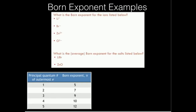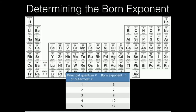Let's do some examples where we determine the Born exponent. Let's look at lithium plus. We need to determine the principal quantum number of the outermost electron. Here's lithium — you might be tempted to say it's two, but remember it has a plus charge, so the 2s1 electron is lost. That means lithium plus has two electrons, meaning its electron configuration is 1s2. The outermost electron is there, so the principal quantum number is one, which means lithium plus would have a Born exponent of five.